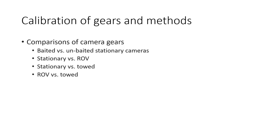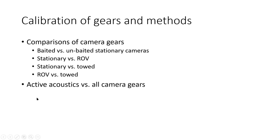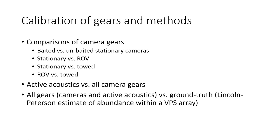Calibration is something we've concentrated heavily on in this project. We compare different camera gears: baited cameras to unbaited stationary cameras, stationary cameras to ROVs, stationary cameras to towed cameras, ROV cameras to towed cameras. We also compare active acoustics to all camera gears, and all gears to a ground-truth estimate of abundance — the Lincoln-Petersen estimate from a VPS, or virtual positioning system array — and compare all of those to our emerging eDNA technology.